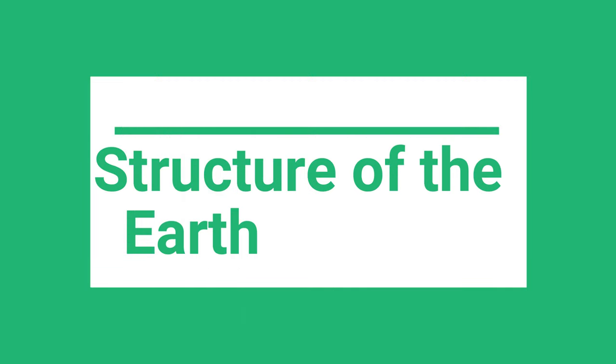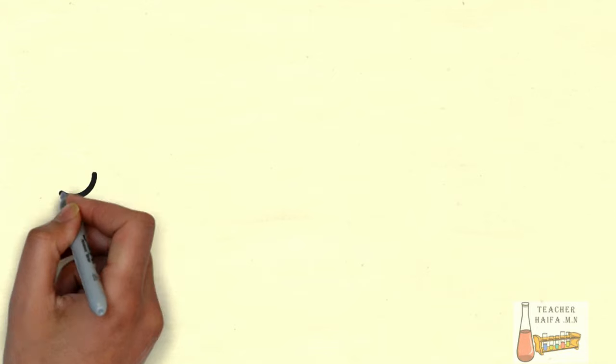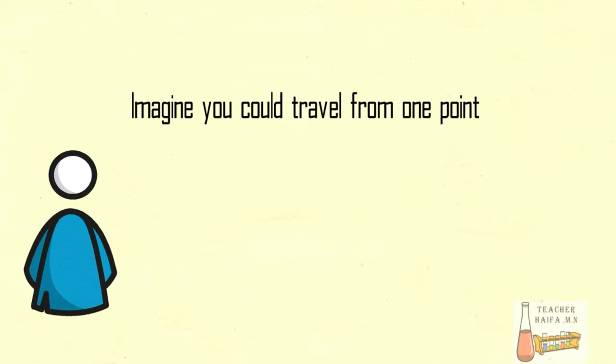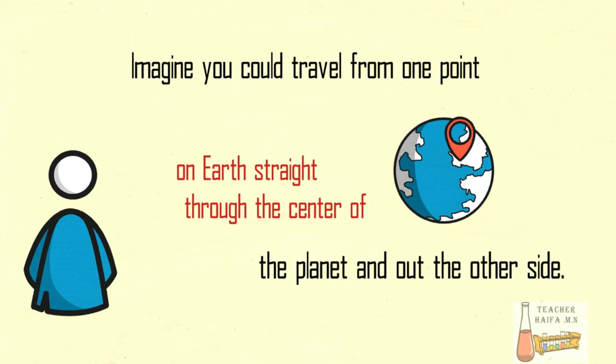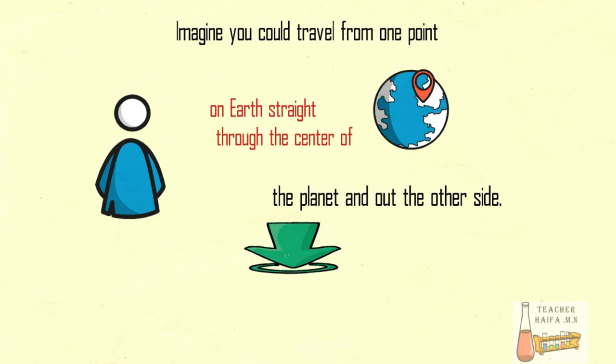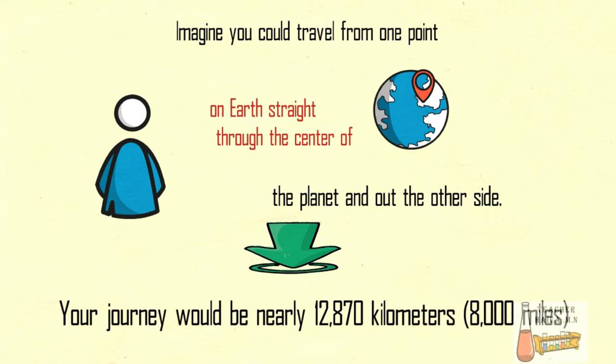Structure of the Earth. Imagine you could travel from one point on Earth straight through the center of the planet and out the other side. Your journey would be nearly 12,870 kilometers.